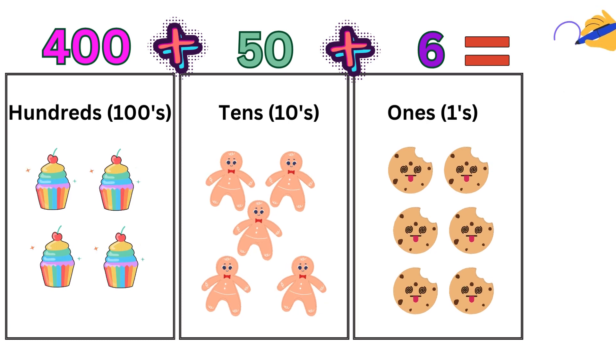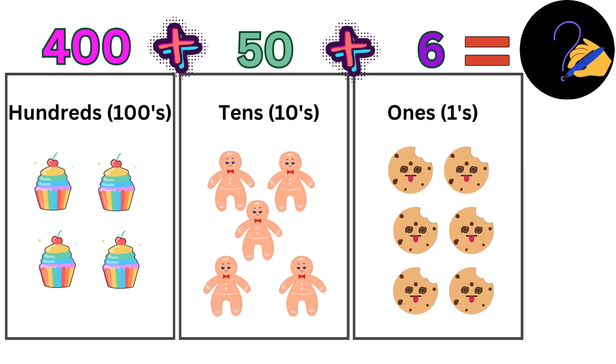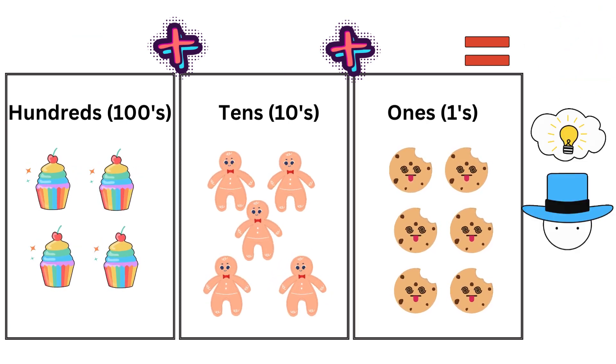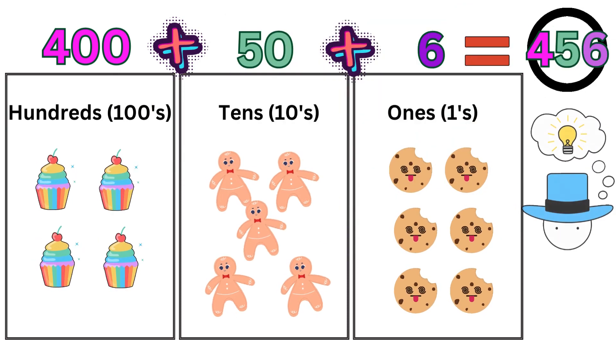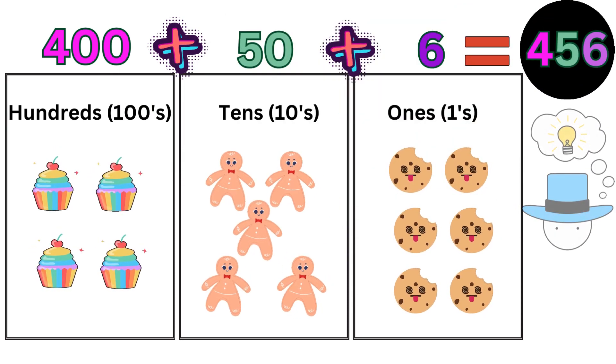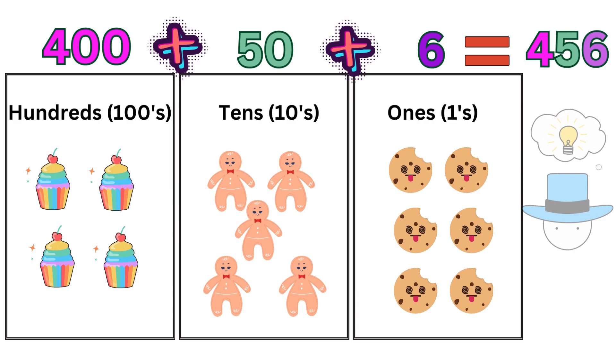So, altogether, the digits 400 plus 50 plus 6 is 456, it is the number 456. Good job playing with digits and finding a number kids.